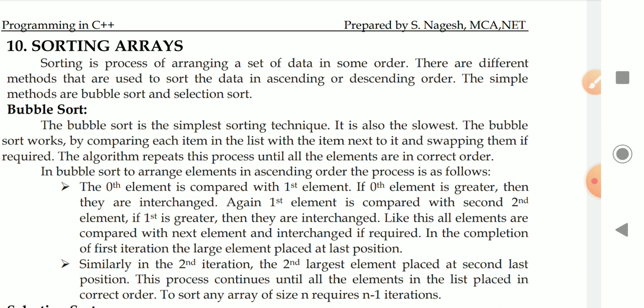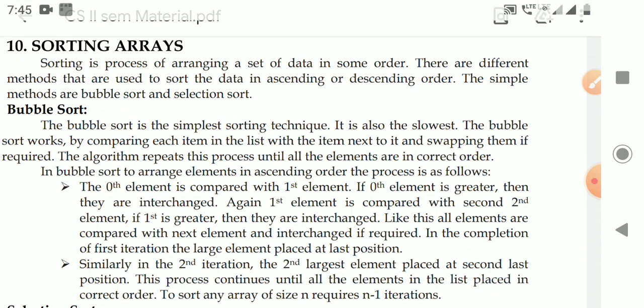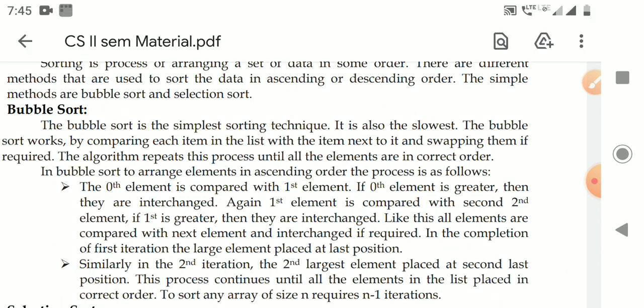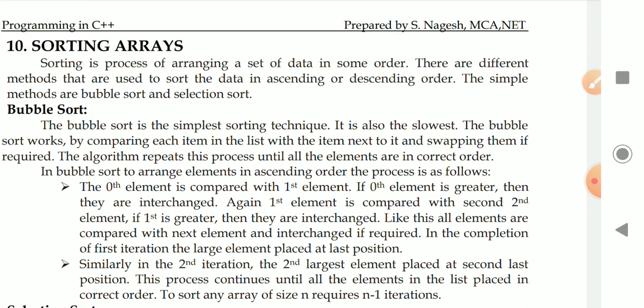There are different methods to sort data either in ascending or descending order. The general topics are bubble sort, selection sort, insertion sort, quick sort, merge sort, and heap sort. As per our syllabus, the most common sorting techniques are bubble sort and selection sort. We can see the remaining sorting techniques in the data structures concept.